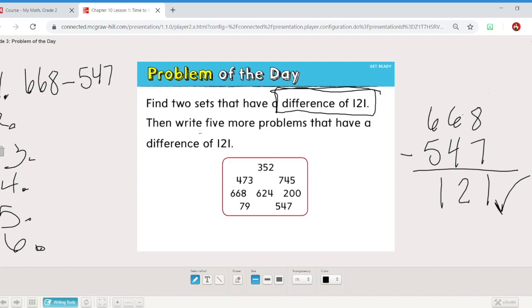When you're finding five more problems that have a difference of 121, you don't have to use two of these numbers. You can use one of them, one of the numbers, and subtract from it. So let's see if I did 352. What would I want to subtract from it to get 121? Well 2 minus 1 is 1, 5 minus 3 is 2, 3 minus 2 is 1. Oh, 352 minus 231. There are so many different possibilities. If you want to stretch your brain today, go ahead and think of a few more number sentences that give you the difference of 121. Remember that all means they are all subtraction. You can pause and solve that. More answers are on the next page.